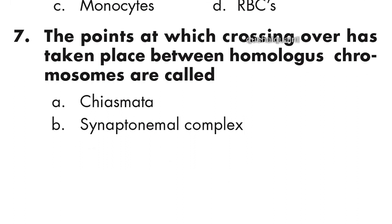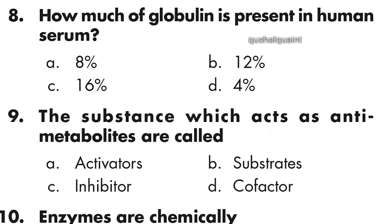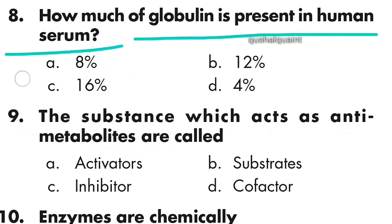Question 7: The point at which crossing over has taken place between homologous chromosomes is called chiasmata. Option is right — chiasmata. Question 8: How much globulin is present in human serum? The answer is 8 percent.